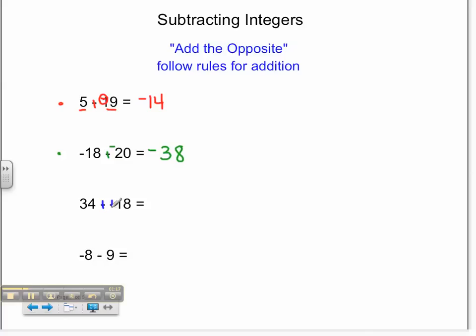I now have 34 plus 18. 34 plus 18 equals 52.